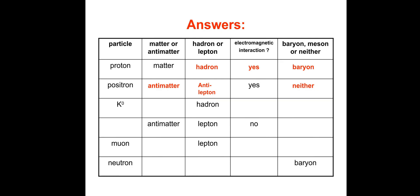K-naught: Matter or antimatter? It's matter. Hadron or lepton? Hadron already given. Electromagnetic interaction? No, because it's got no charge. Baryon, meson, or neither? It's a meson, specifically a K-meson or K-on.